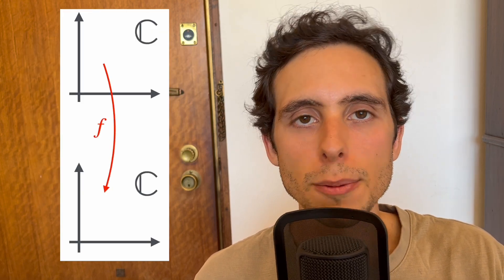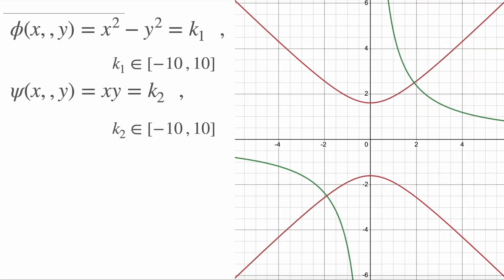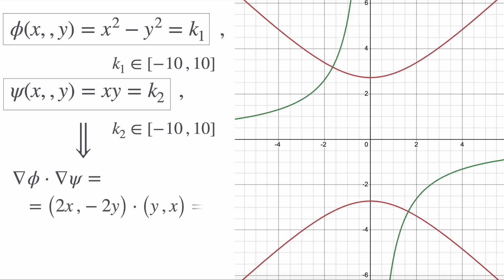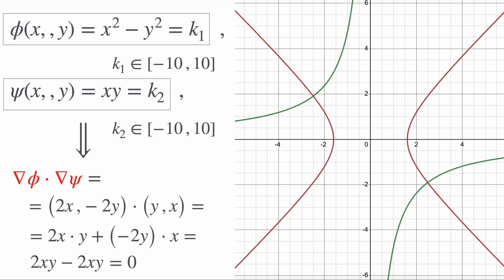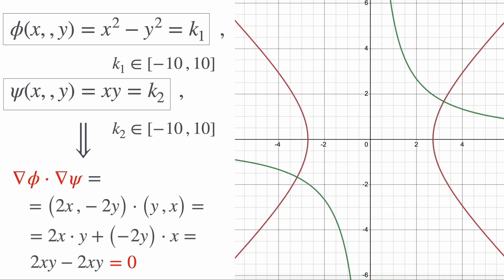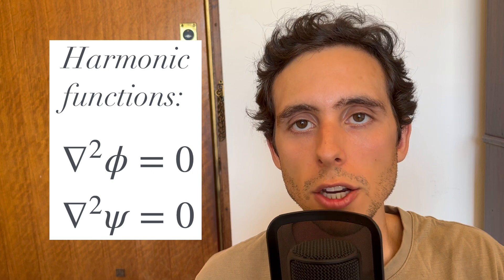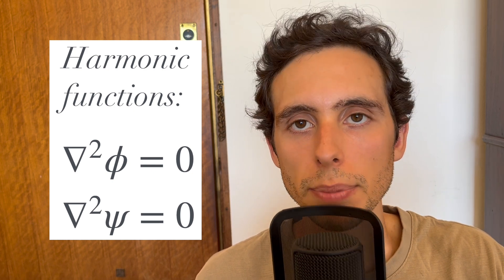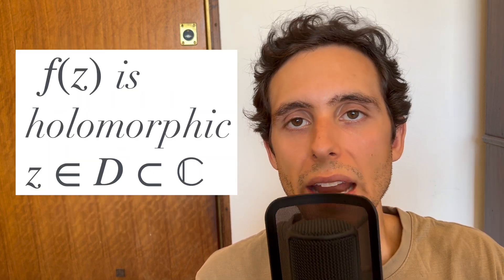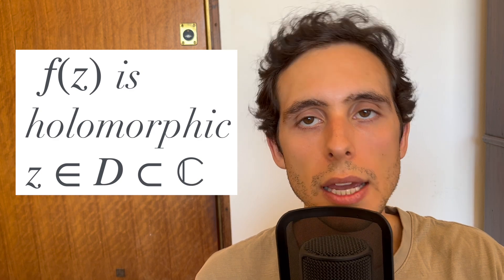The electric field E is related to the electric potential — it's basically minus the gradient of the electric potential. In electrostatics, the stream function psi represents the lines of constant potential in the complex potential function f. These lines are hard to draw because f and psi are mappings from the complex plane to the complex plane, and thus their graphs are four-dimensional hypersurfaces. The level curves of psi are orthogonal to the equipotential lines of phi. Both the electric potential and the stream function psi are harmonic functions, so they satisfy Laplace's equation. This implies that f of z is holomorphic in the domain d.